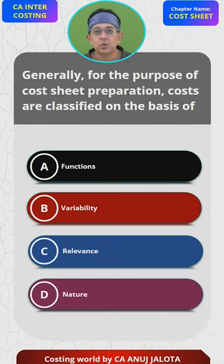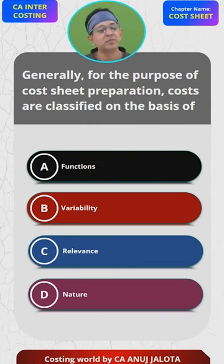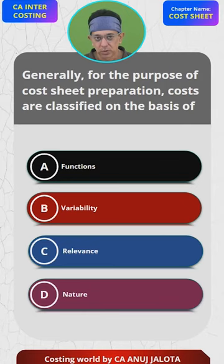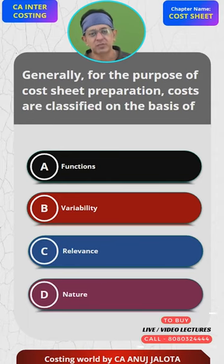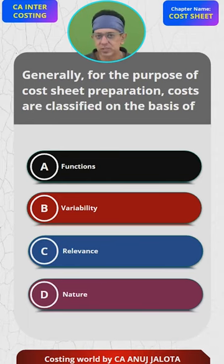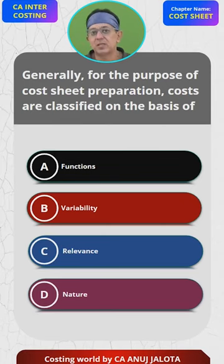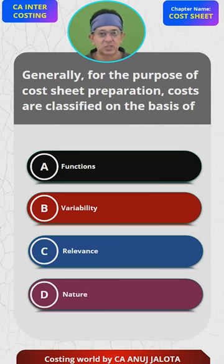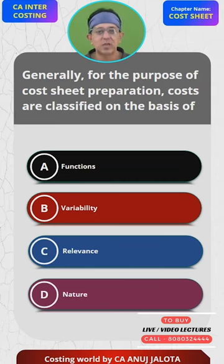So whenever you prepare the cost sheet, we do not classify them based upon variability. In your cost sheet, you don't have fixed and variable. Same thing for nature — we don't classify them based upon fixed, variable or semi-variable. So B and D almost mean the same thing, and neither can be the answer. Relevance means whether costs are relevant for decision making or not, and we don't consider that when making a cost sheet either.